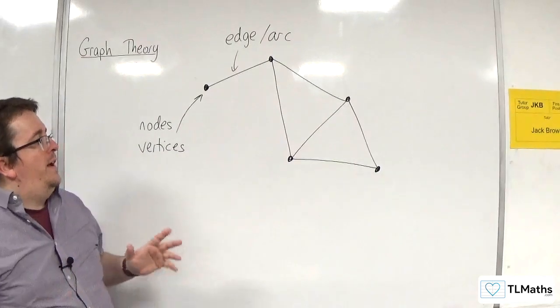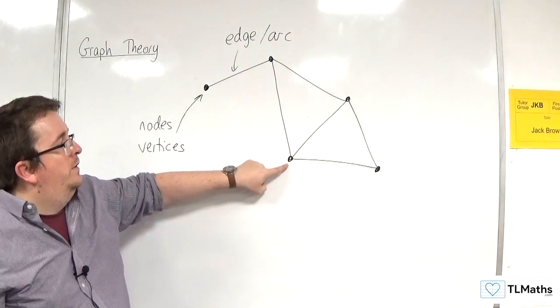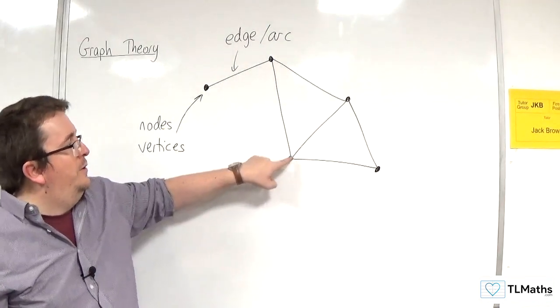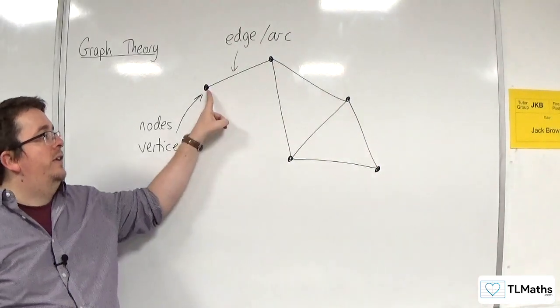All it's saying is that this node is connected to this node directly. And this node is directly connected to that node. This node is not directly connected to this one.